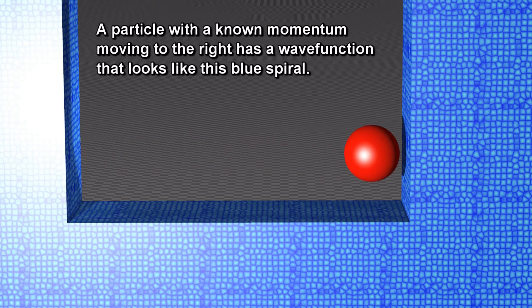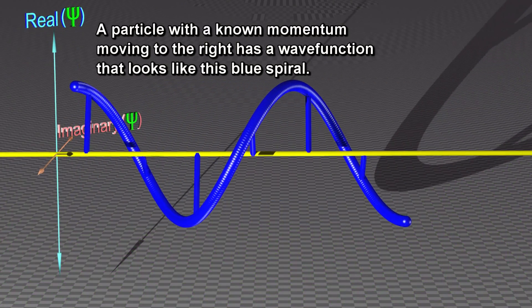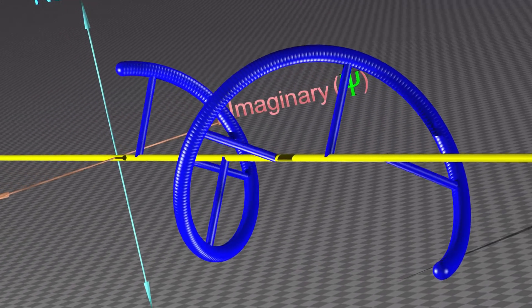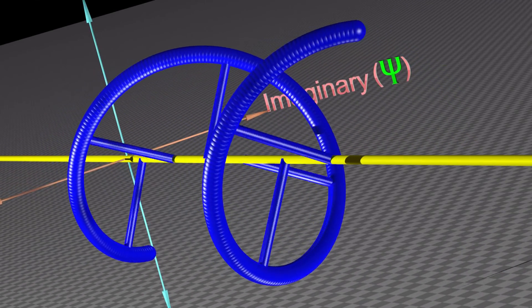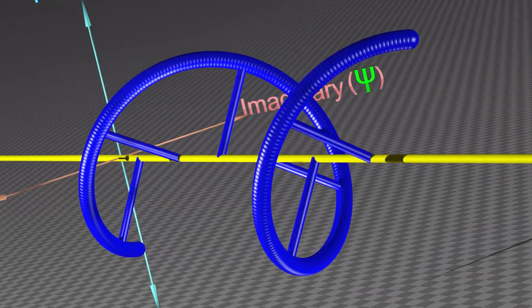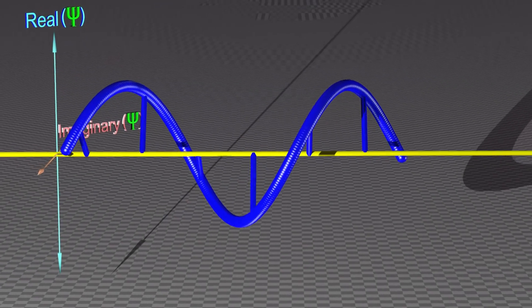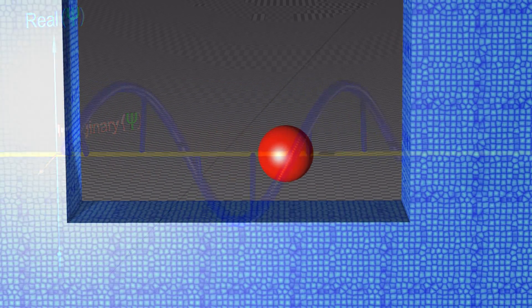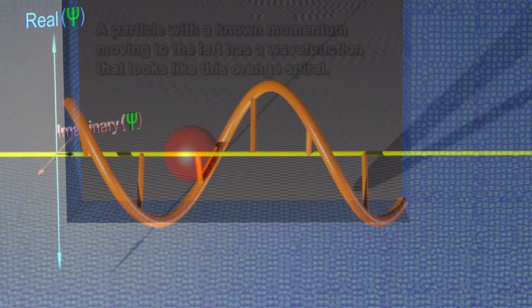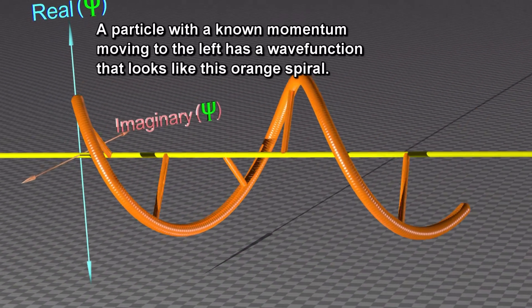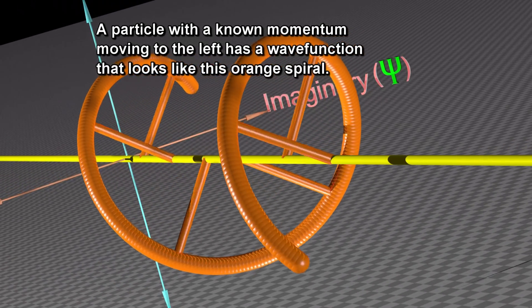A particle with a known momentum moving to the right has a wave function that looks like this blue spiral. A particle with a known momentum moving to the left has a wave function that looks like this orange spiral.